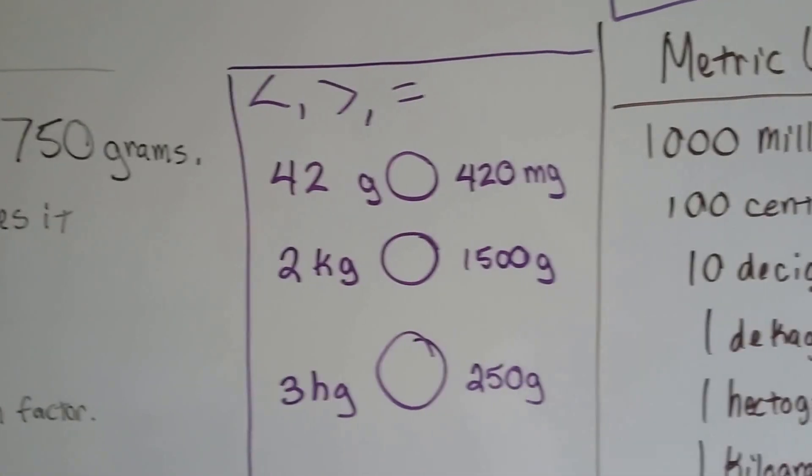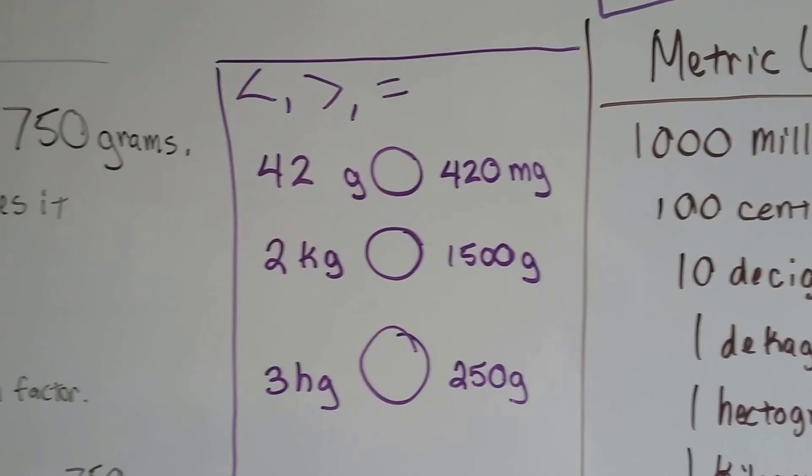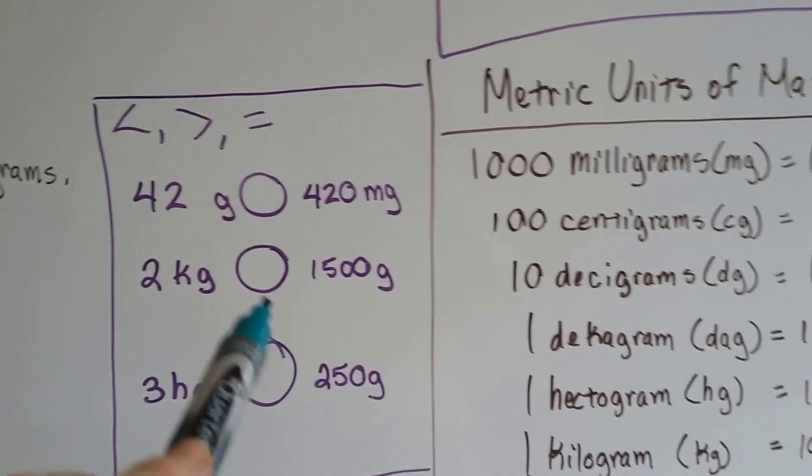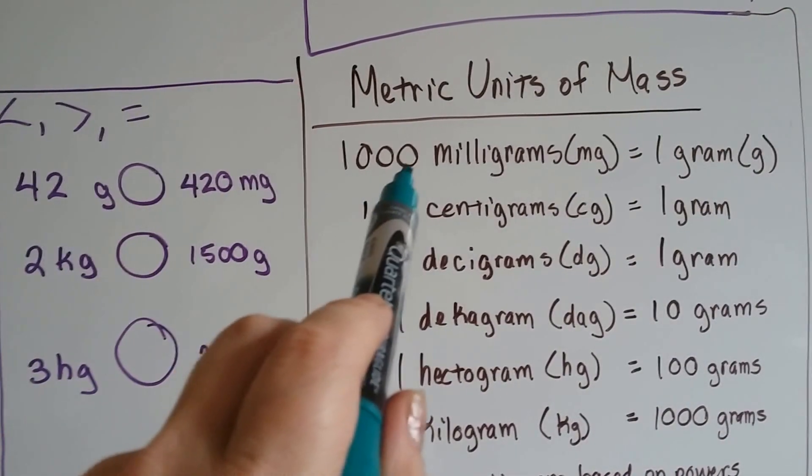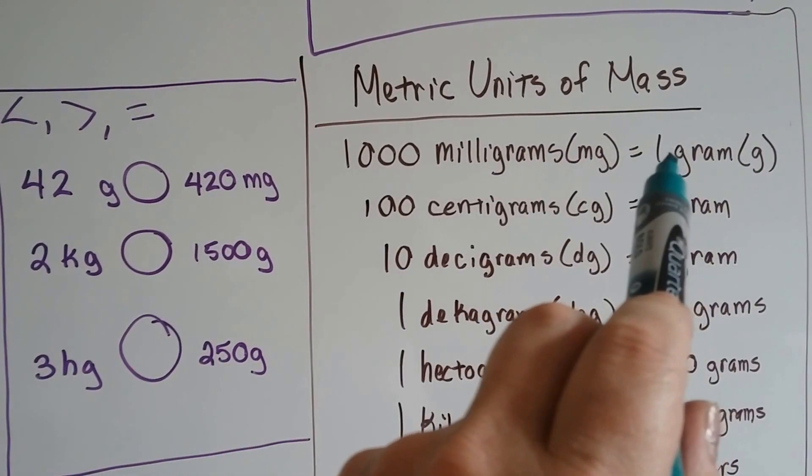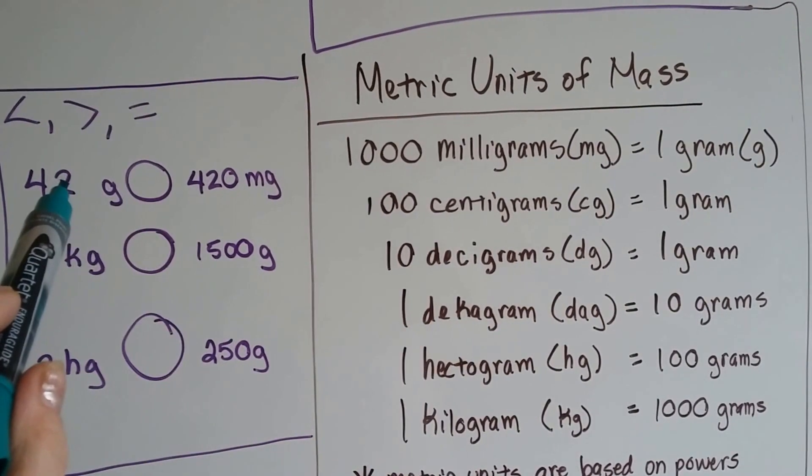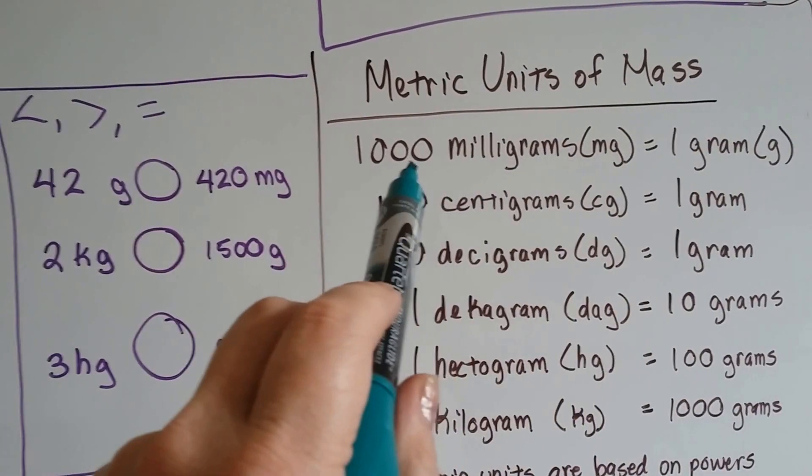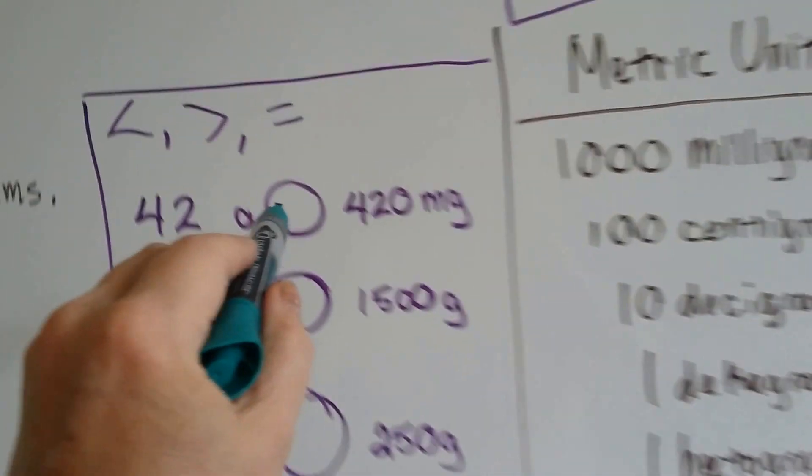What would these equal? Which is bigger? Less than, greater than, or equal? 42 grams or 420 milligrams? Which one's bigger? Well, 1,000 milligrams is just one gram. So 42 grams, that would be 42,000 milligrams, wouldn't it? So the 42 grams is much bigger.